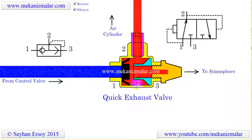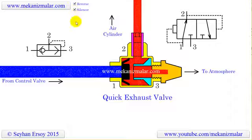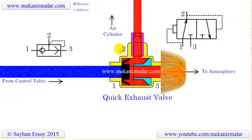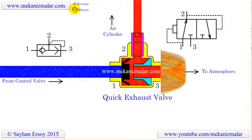In quick exhaust valves, silencers are usually used to reduce the noise. Omission of the silencer causes air to be discharged quickly to the environment with a loud whooshing sound.